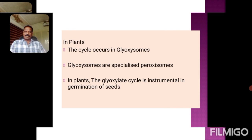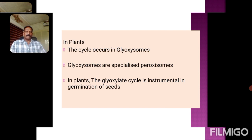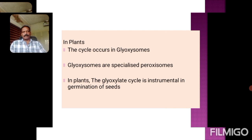In plants, the cycle occurs in glyoxysomes, which are specialized organelles — a specialized peroxisome. In plants, this particular cycle is especially important in germinating seeds, because seeds can store fatty acids or fats. Lipids are the best form of stored energy, so this cycle is very significant in germinating seeds.